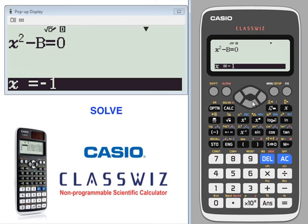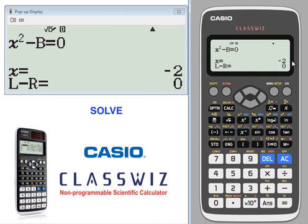We want to solve for x, so we toggle back to the x value and press execute or equals to get our solution of negative 2.